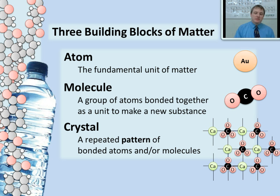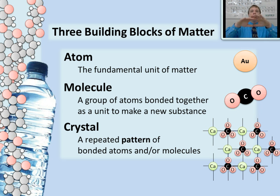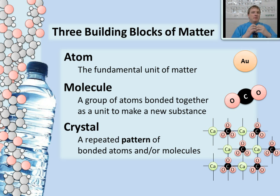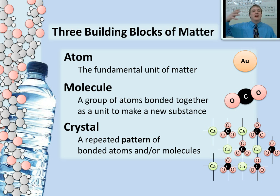Here's an example of another substance that forms crystals: calcium carbonate, which we commonly refer to as limestone. Notice that calcium carbonate has calcium atoms and carbonate molecules, but the atoms and molecules are bonded together in a repeating pattern with that crystal network shown in the background. This is also a crystal, even though it contains molecules as part of the crystal. So these are the three basic building blocks — all matter is made up of atoms, those atoms can combine to make molecules, or they can arrange themselves in repeating patterns to make crystals, and sometimes molecules will also form within those repeating crystal patterns.